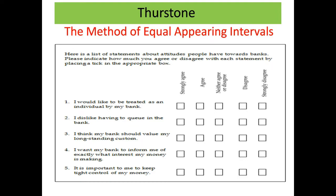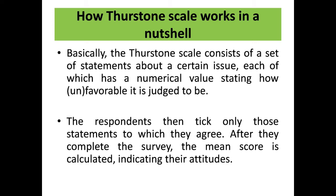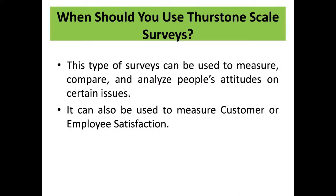In psychology and sociology, the Thurstone scale was the first formal technique to measure an attitude. It was developed by Louis Leon Thurstone in 1928 as a means of measuring attitudes towards religion. The Thurstone scale consists of a set of statements about a certain issue, each with a numeric value stating how favorable or unfavorable it is judged to be. Respondents tick only those statements they agree with; after completing the survey, the mean score is calculated indicating their attitude. This type of survey can be used to measure, compare, and analyze people's attitudes on certain issues, and can also be used to measure customer or employee satisfaction.